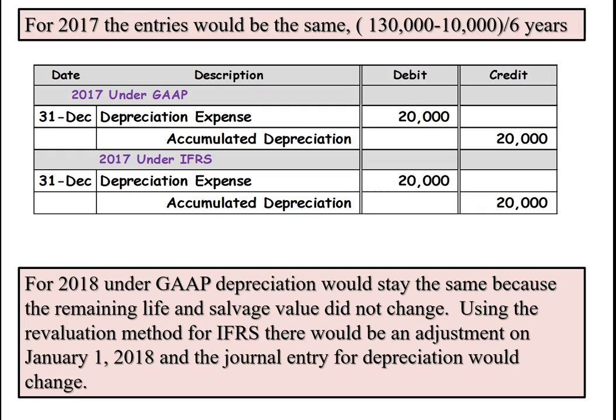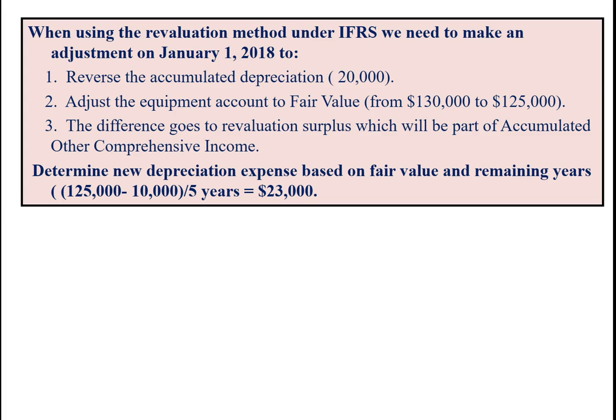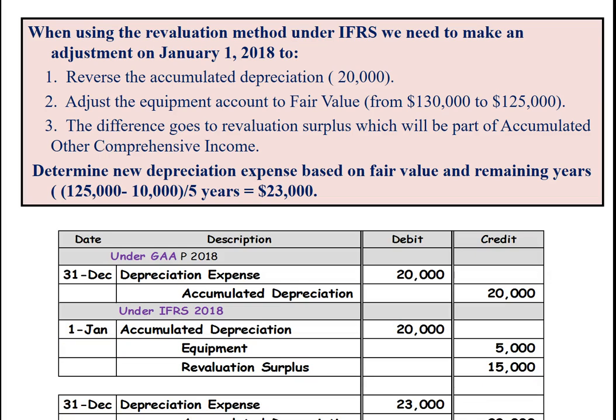GAAP will remain the same because the remaining life and salvage value did not change under the revaluation. However, since we're using the revaluation method for the international standard, there would be an adjustment on January 1st, and then a journal entry for the new depreciation amount. On January 1st, 2018, we would reverse the accumulated depreciation from the previous year, adjust the equipment account to the fair value of $125,000 versus $130,000 — so we'd take $5,000 off the books — and the difference between the $20,000 and the $5,000 would go to accumulated other comprehensive income as revaluation surplus. We would also determine the new depreciation expense based on fair value and remaining years, which equals $23,000.